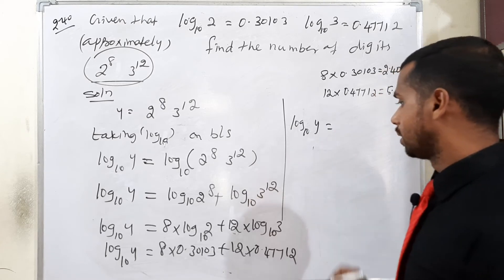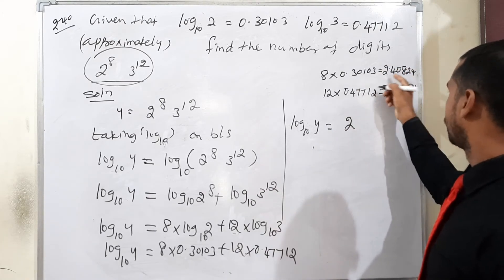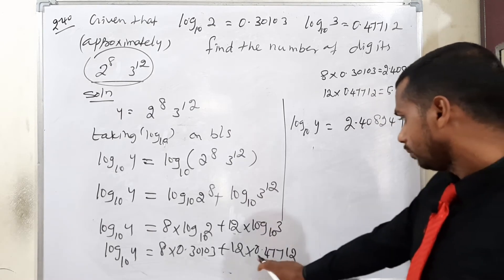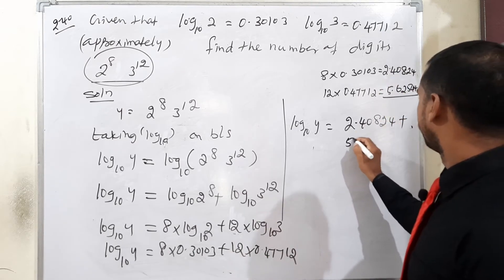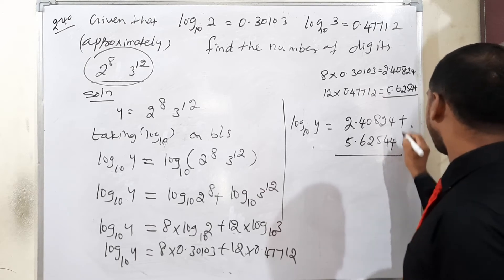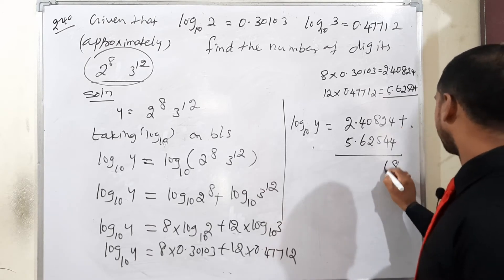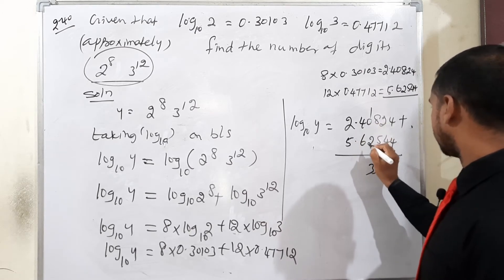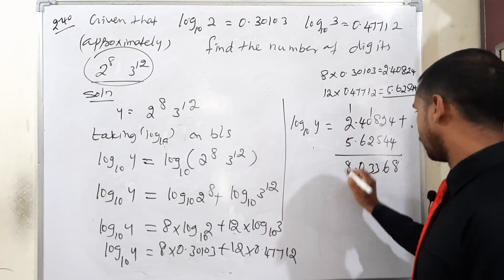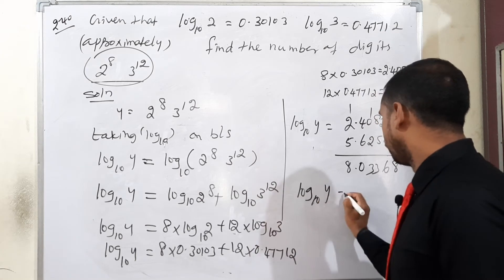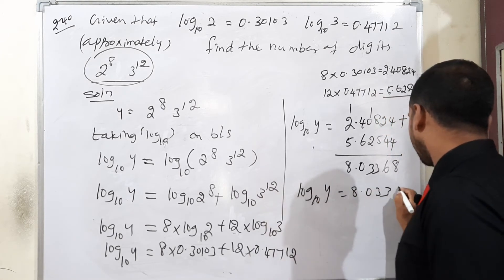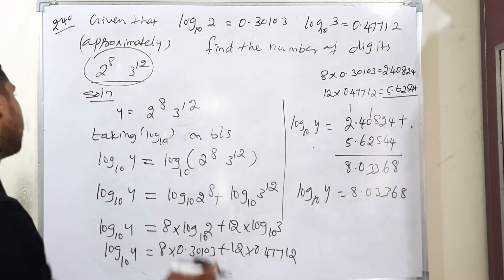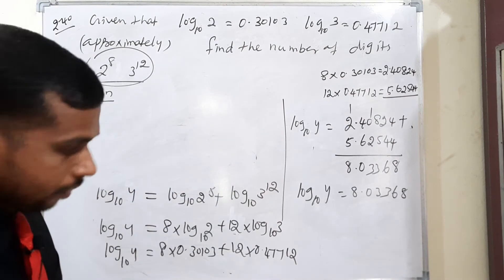8 into 0.30103 equals 2.40824 plus 12 into 0.47712 equals 5.62544. Adding these: 4 plus 4 equals 8, 2 plus 4 equals 6, 8 plus 5 equals 13, carry 1, 1 plus 2 equals 3, 4 plus 6 equals 10. Therefore, log y base 10 is equal to 8.03368.